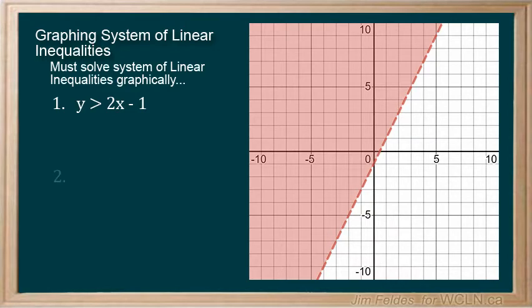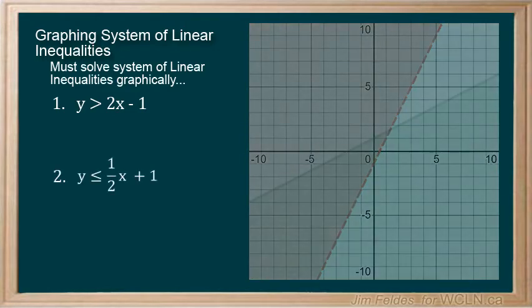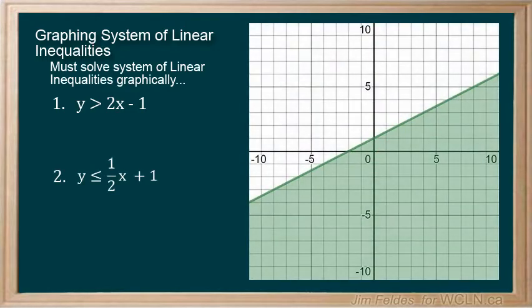A second linear inequality with its graph. Notice the solid green boundary line as it includes equal to, and the less than sign means the solution lies below the line.